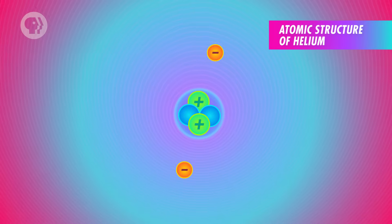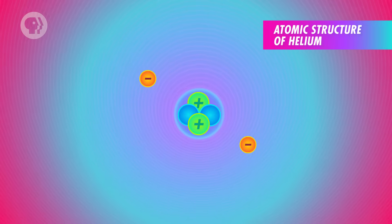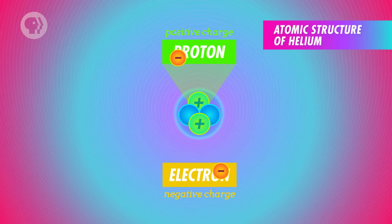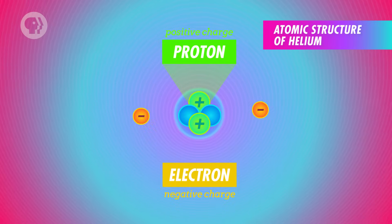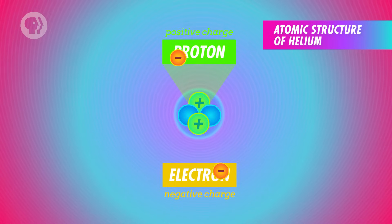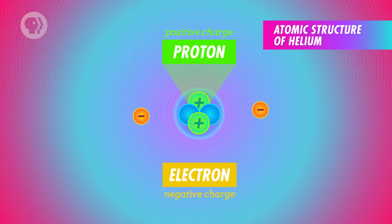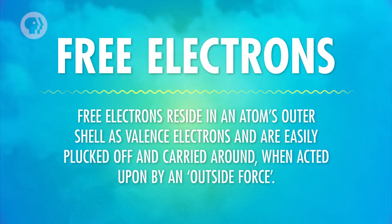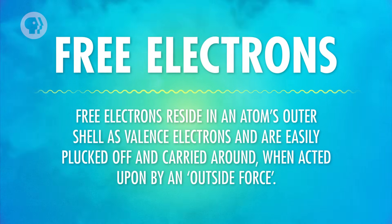To understand electricity, you should start with an atom. Atoms contain charged particles – positive protons and negative electrons. And generally, there's an equal number of each, meaning the net electric charge of the atom is zero – it's electrically neutral. In solid materials, protons stay fixed, but some electrons are free to move around. These moving electrons are called free electrons.